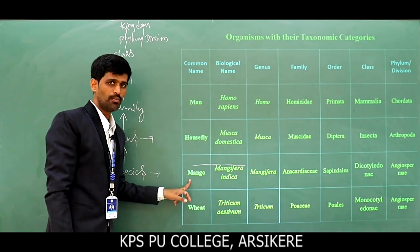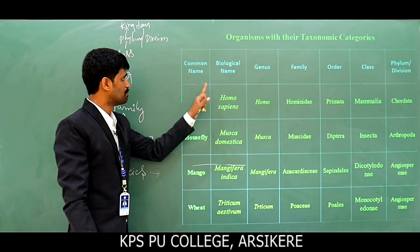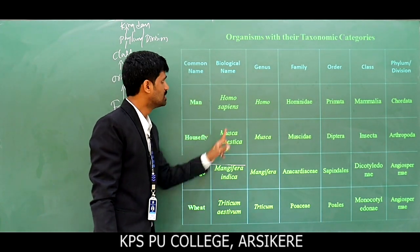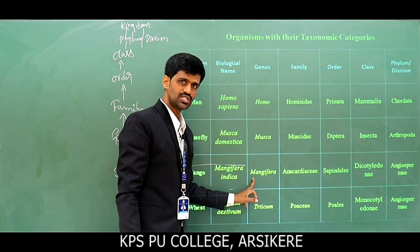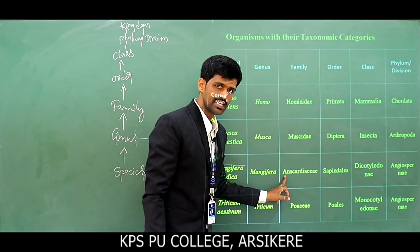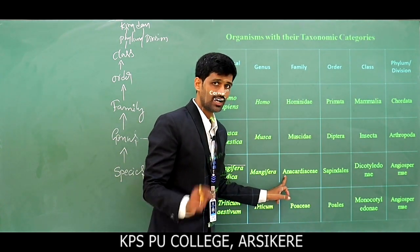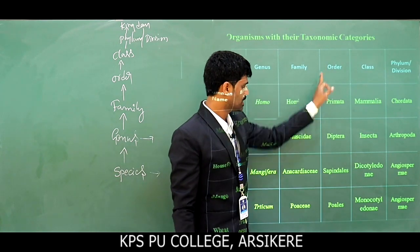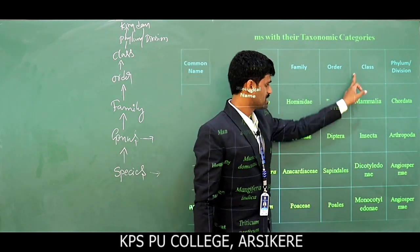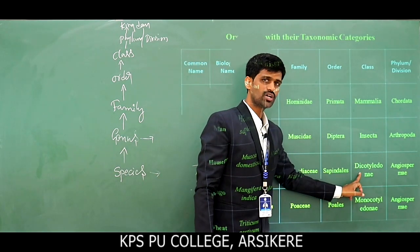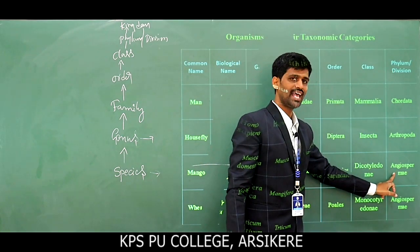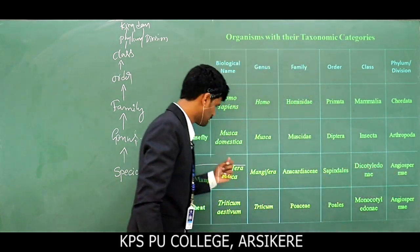Third example: common name — Mango; biological name — Mangifera indica; genus — Mangifera; family — Anacardiaceae; order — Sapindales; class — Dicotyledinae; division — Angiospermae.